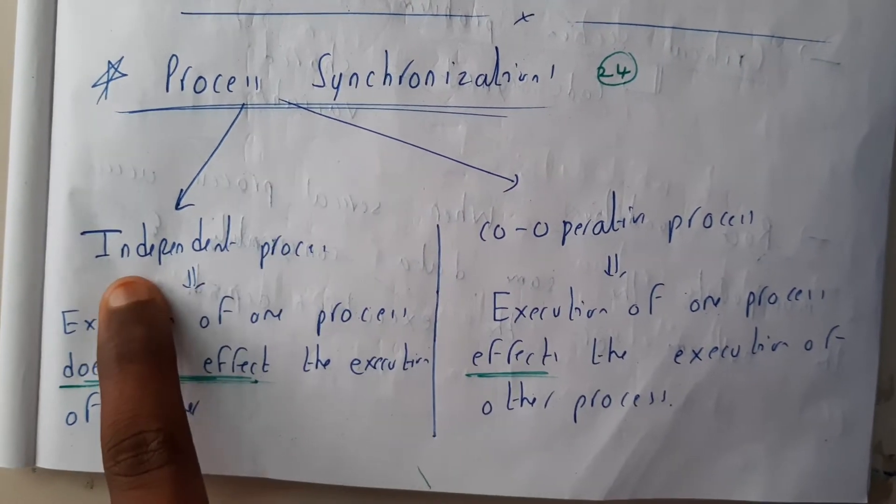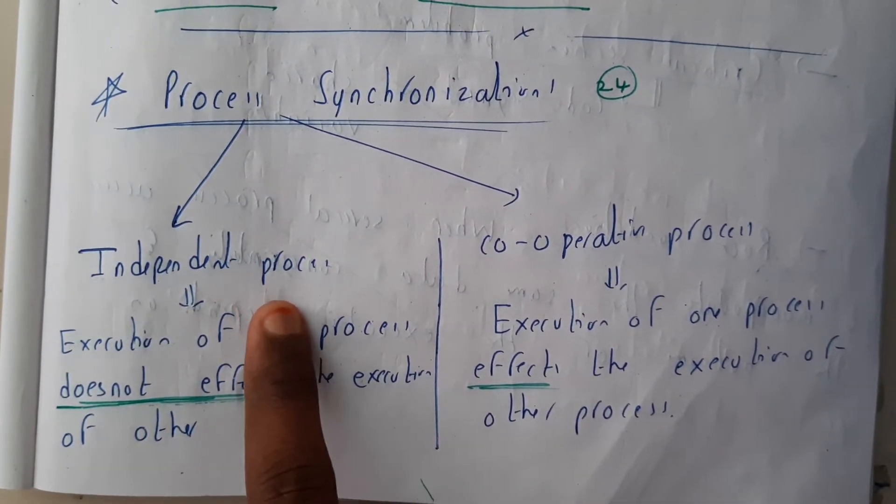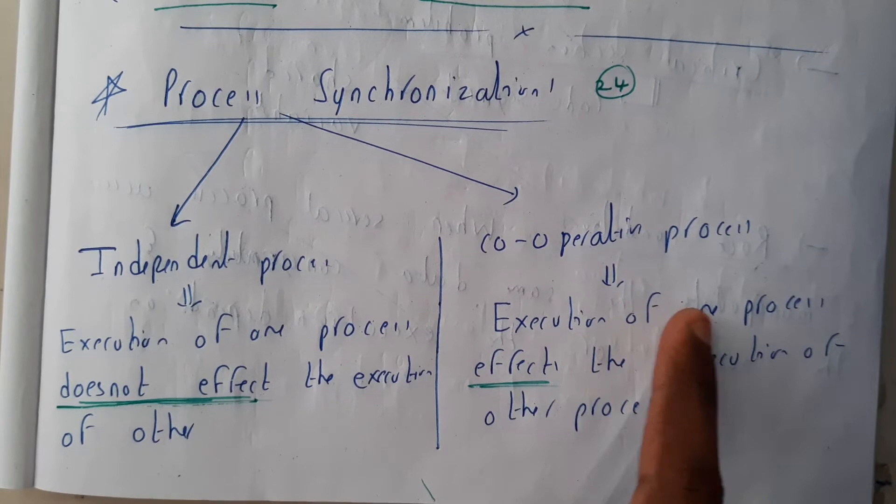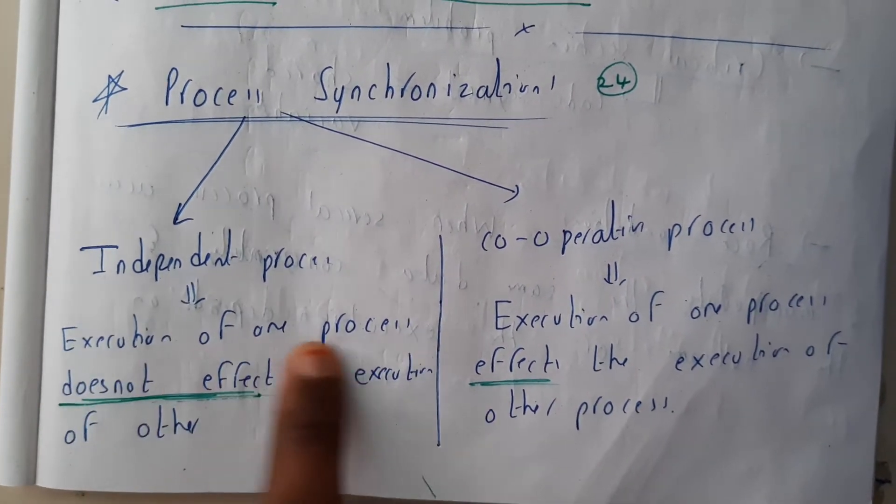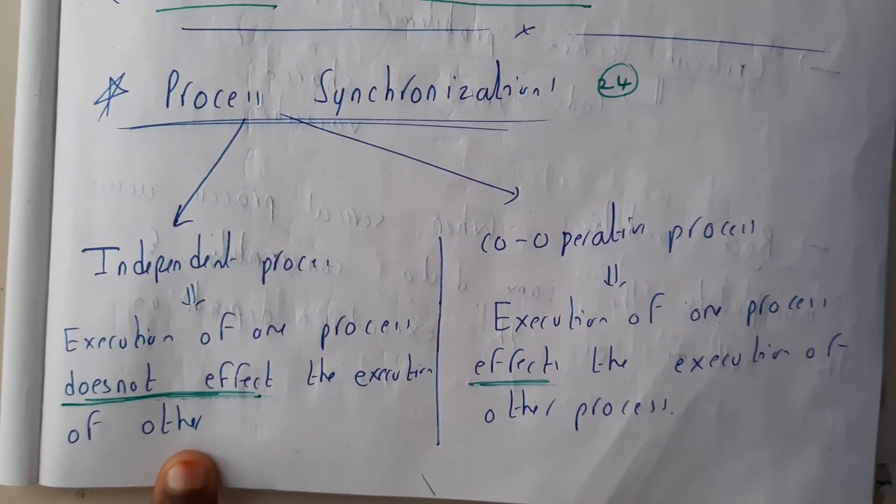Those are nothing but independent process which do not depend on others and cooperative process - they depend on others. So execution of one process does not affect the execution of other, that is nothing but independent, right? They do not depend on others.